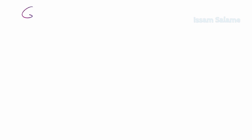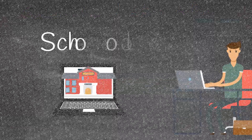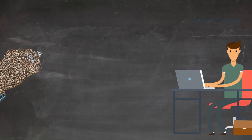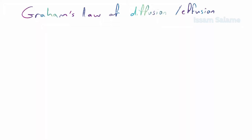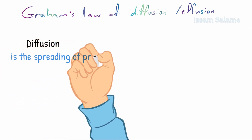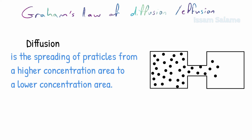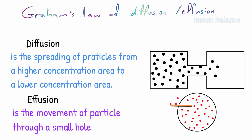Welcome back. This video is about Graham's Law of Diffusion or Graham's Law of Effusion. Diffusion is the spreading of particles from a higher concentration area to a lower concentration area, as you can see in the photo. Effusion is the movement of particles through a small hole, like what's happening in the opposite photo.